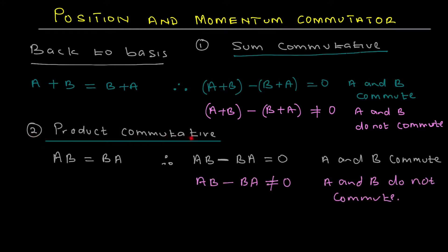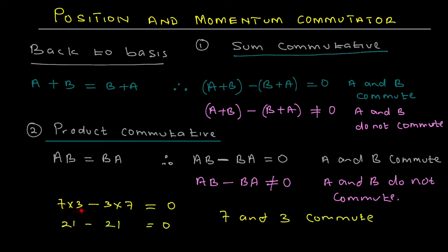Number two: product commutative. If ab equals ba, therefore ab minus ba must be equal to zero — in that case, a and b commute. But if ab minus ba is not equal to zero, a and b do not commute. Example: 7 times 3 minus 3 times 7 is 21 minus 21, which is zero. Therefore 7 and 3 commute.